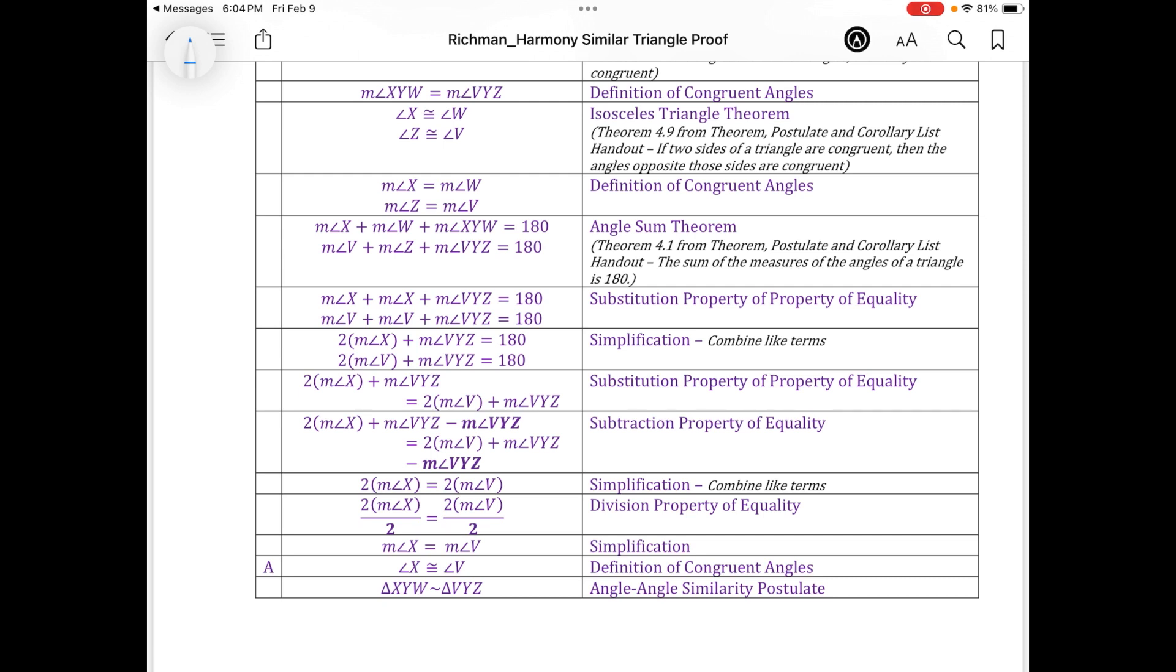Well then I thought, I'm on a roll here. I could utilize the substitution property to help me out with the step prior. So if I had substituted for the measure of angle W the measure of angle X, and similarly in the second equation replaced the measure of angle Z with the measure of angle V, I would have a common measure that I could combine together.